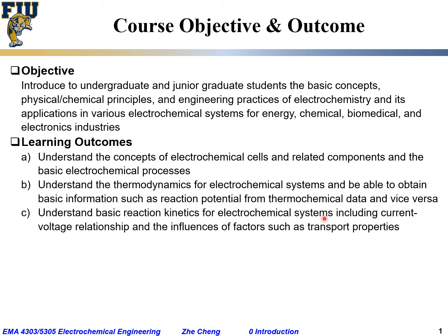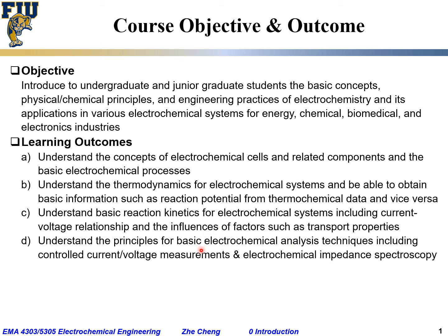The third outcome is to understand the basic reaction kinetics for electrochemical systems, including the current-voltage relationship. Because it's electrochemistry, we always deal with electrical current and voltage, and these relationships tell us about reaction kinetics — how fast reactions happen — and the influences of factors such as material transport properties and structures in the electrochemical system. The fourth outcome is to understand the principles of basic electrochemical analysis techniques including controlled current or voltage measurement, cyclic voltammetry, chronoamperometry, and electrochemical impedance spectroscopy (EIS), which is widely used in batteries, corrosion, and fuel cells.